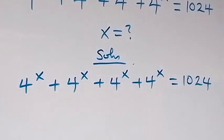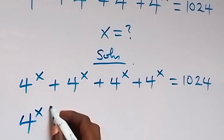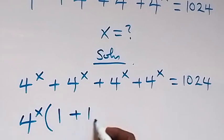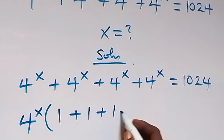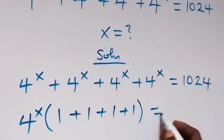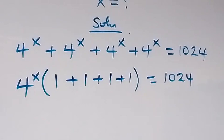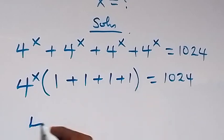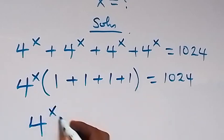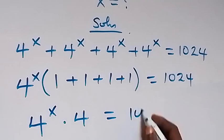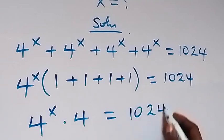Here we can factor 4 to the power x out, and in the bracket we are left with 1 plus 1 plus 1 plus 1, which equals 1024 on this side. Then 1 plus 1 plus 1 plus 1 is 4, so we have 4 to the power x times 4 equals 1024.